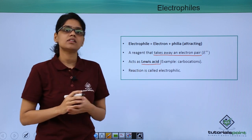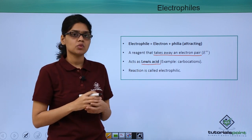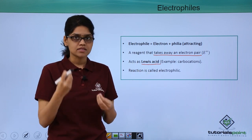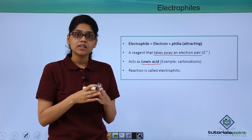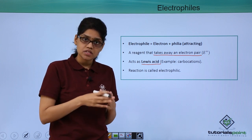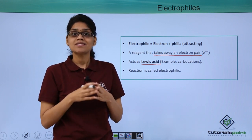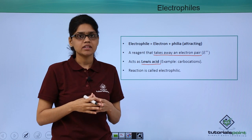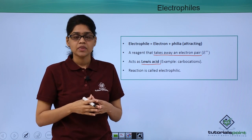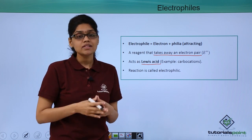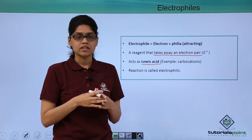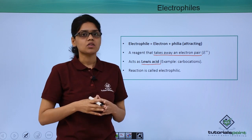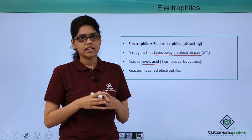A typical example of an electrophile would be a carbocation, as we have discussed previously, where carbon is electron-deficient and has only six electrons, seeking an electron pair to complete its octet. Those reactions in which an electrophile participates are called electrophilic reactions.